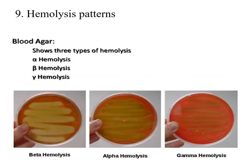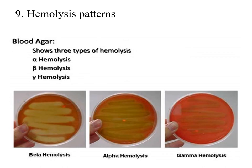We're also going to look at the hemolysis pattern — specifically on blood agar — because different bacteria have different hemolysis patterns on blood agar. It is characterized by either alpha hemolysis, which is partial hemolysis seen as a greenish discoloration of the media; beta hemolysis, which is complete hemolysis seen as a yellowish discoloration; or gamma hemolysis, which is no hemolysis with no change in the color of the media.